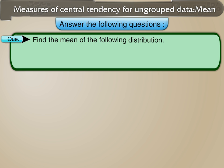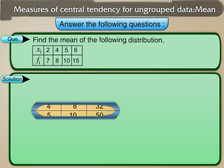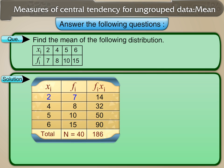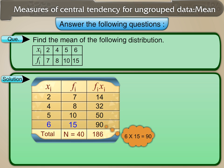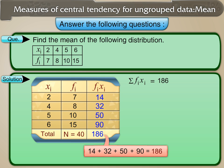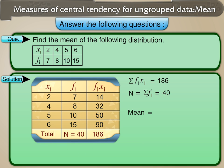Find the mean of the following distribution. F1x1 equals 2 times 7 equals 14. F2x2 equals 4 times 8 equals 32. F3x3 equals 5 times 10 equals 50. F4x4 equals 6 times 15 equals 90. Here, sigma fi·xi equals 186, and n equals sigma fi equals 40. Therefore, mean equals sigma fi·xi upon n equals 186 upon 40 equals 4.65.